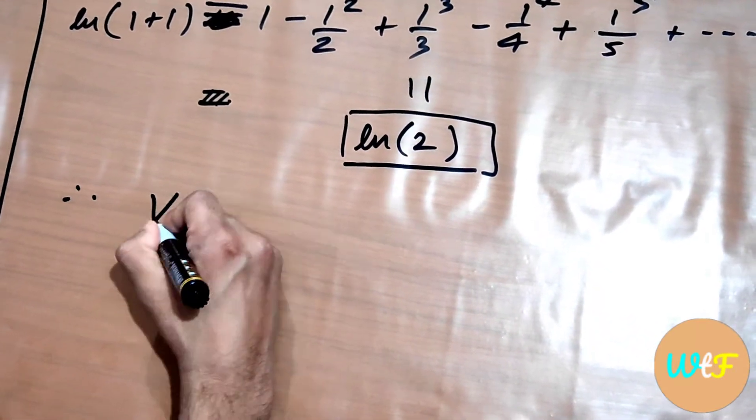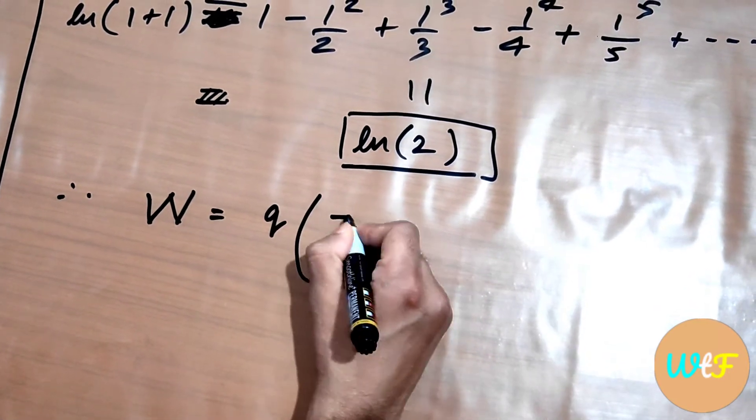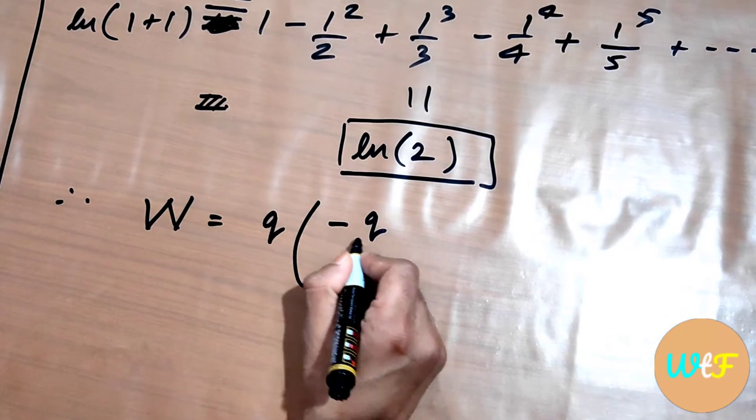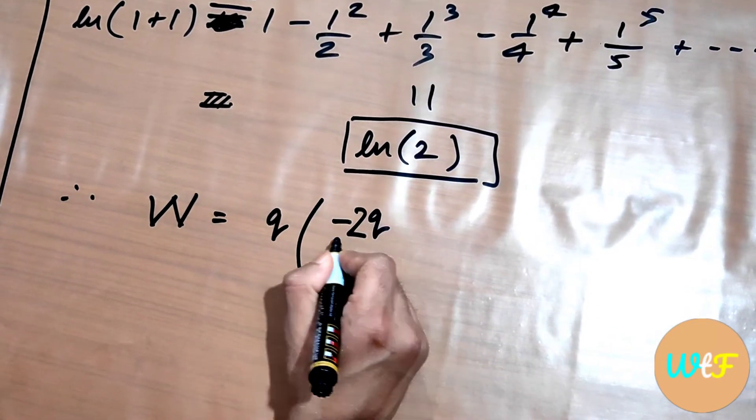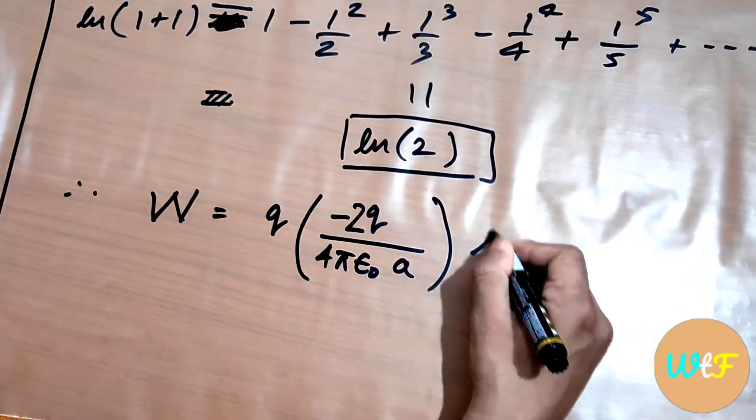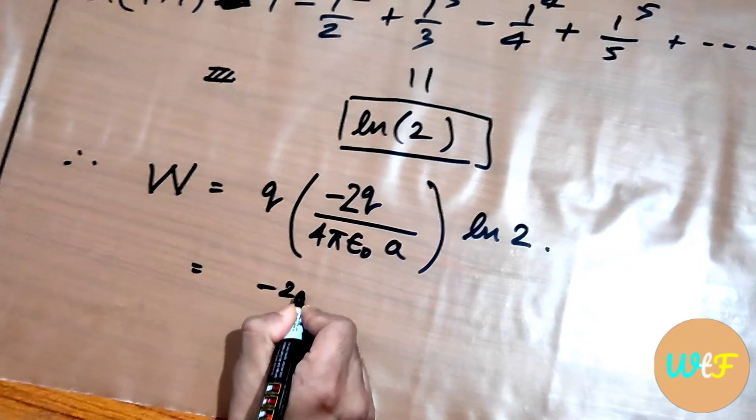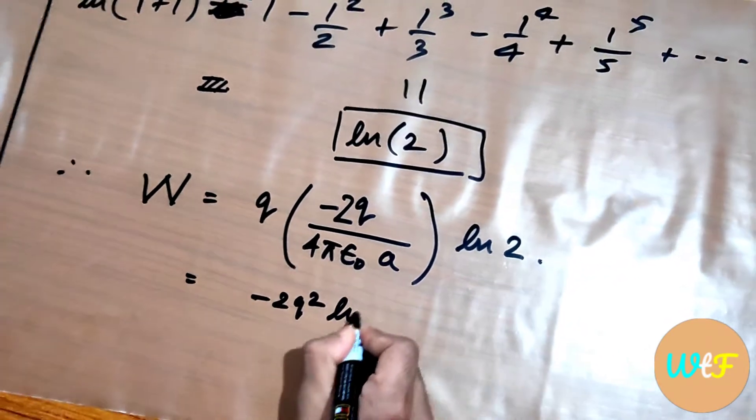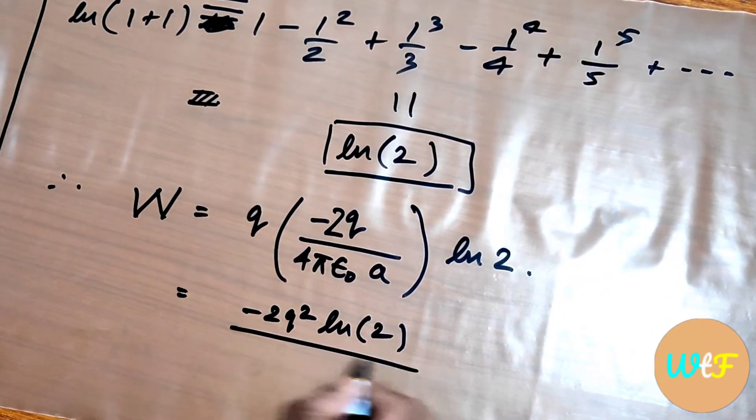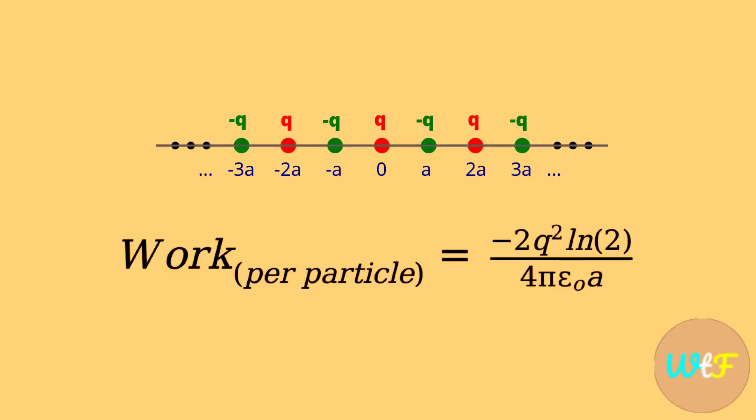Therefore the work required will be equal to q into minus 2q by 4π ε₀ a into natural log of 2. That is minus 2q² natural log of 2 by 4π ε₀ a. Thank you.